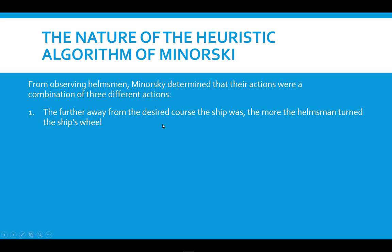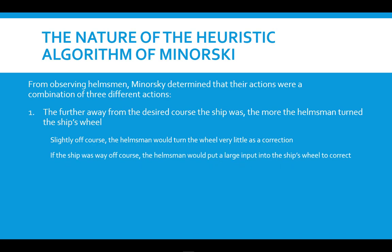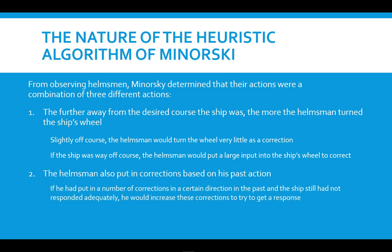What Minorski discovered heuristically from watching the helmsmen was three different actions. The further away from the desired course the ship was, the more the helmsman turned the wheel — a small correction for slightly off course, a large input for way off course. Additionally, the helmsman was cognizant of his past actions: if he had put in a number of corrections and the ship still hadn't responded adequately, he would increase those corrections to try to get a response.